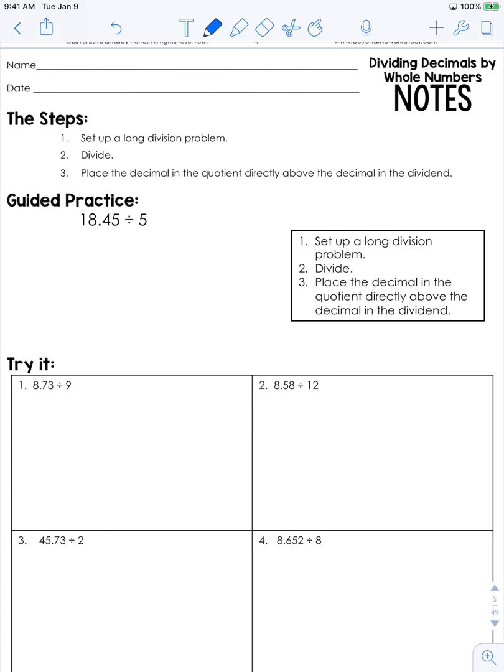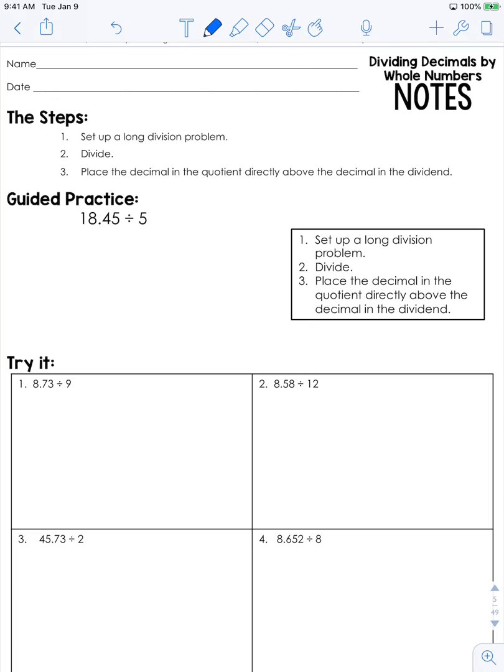We're going to divide decimals, starting by dividing decimals by whole numbers. Your steps are to set up a long division problem, divide, and then place the decimal in the quotient directly above the decimal in the dividend.